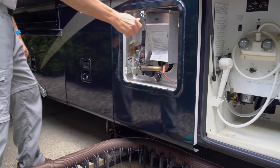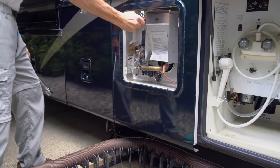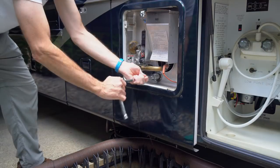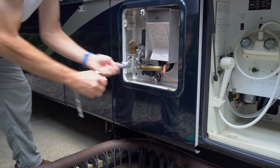We start by turning off the city water and the water pump, then opening the overpressure relief valve, then we'll remove the anode rod and let the tank drain.